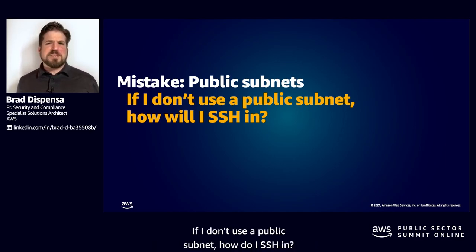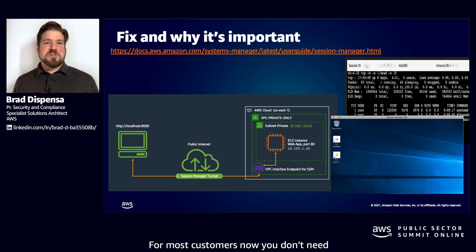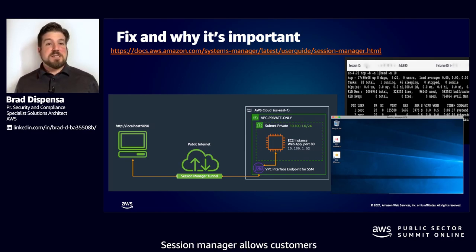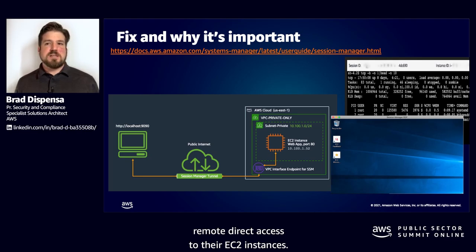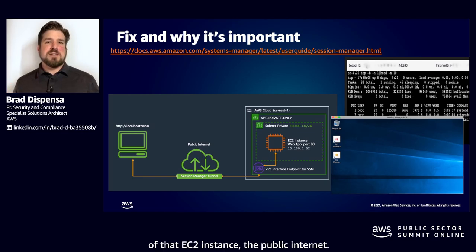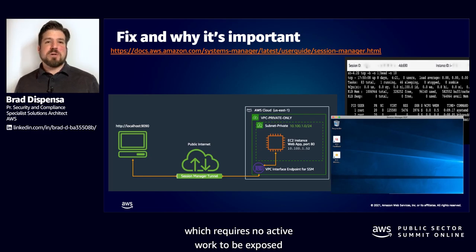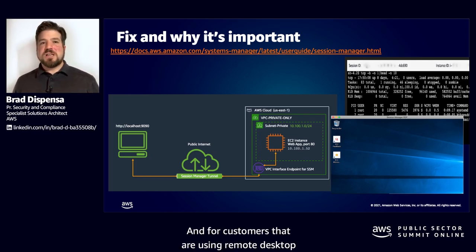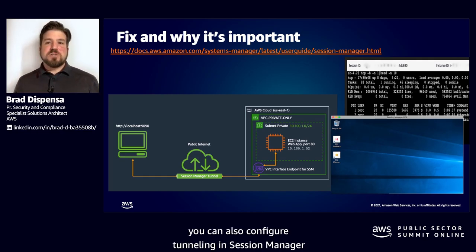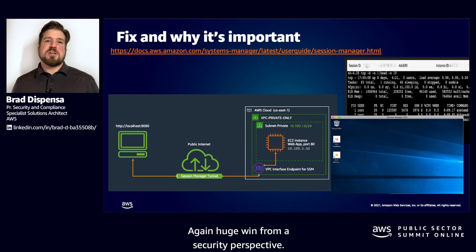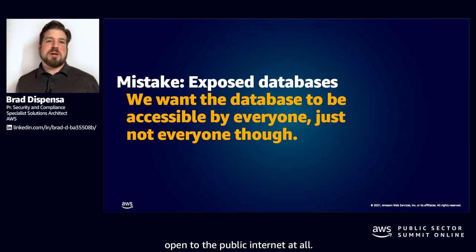The next thing is public subnets. If I don't use a public subnet, how will I SSH in? The answer is you're doing it wrong. For most customers now, you don't need command and control access through SSH or RDP. Instead, use AWS Session Manager. Session Manager allows customers remote direct access to their EC2 instances and prevents exposing them to the public internet — no more audit findings for port 22 or other sensitive ports exposed to the internet. Session Manager requires no active port to be exposed in the security group. For customers using remote desktop and wanting an interactive shell, you can also configure tunneling in Session Manager to forward that RDP session through the tunnel.